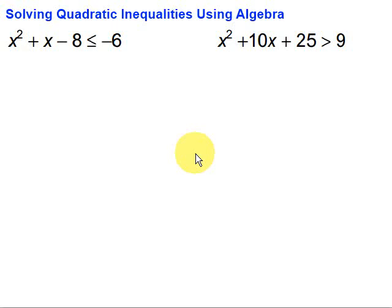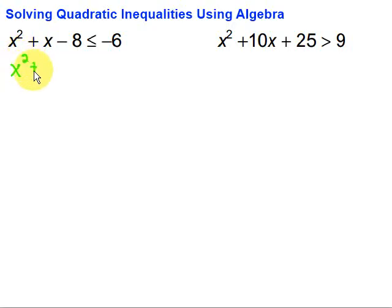In this video, we're going to take a look at solving quadratic inequalities in one variable using algebra. The first step is to find the related equation, which is just the inequality but with an equal sign. So we're going to start with that, and for this first one, it's going to be x squared plus x minus 8 equals negative 6.